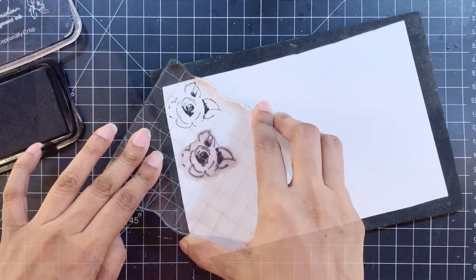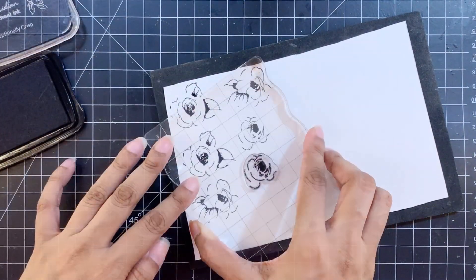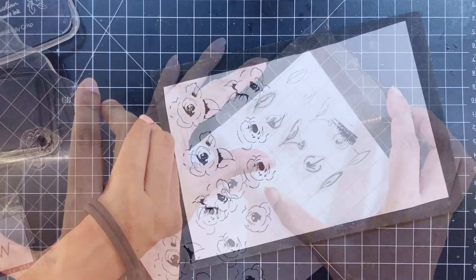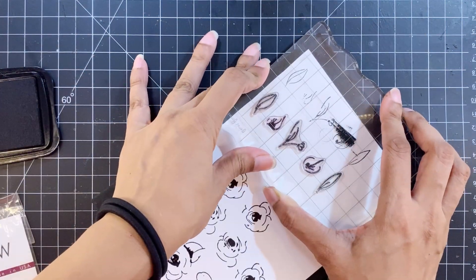Today's project features the Painted Flowers Stem Set. I will stamp several of these flowers and leaves on watercolor paper by Canson.